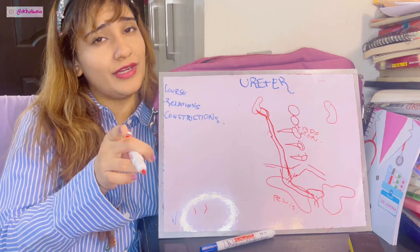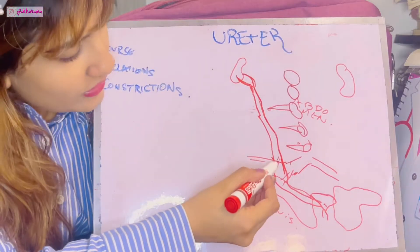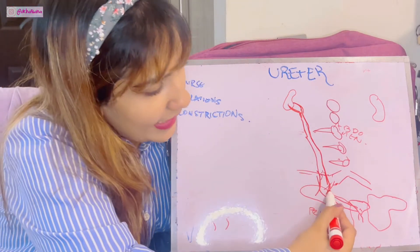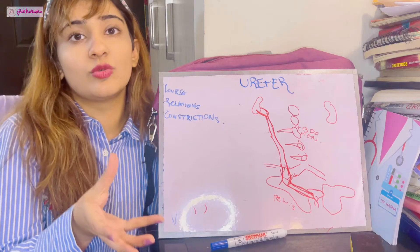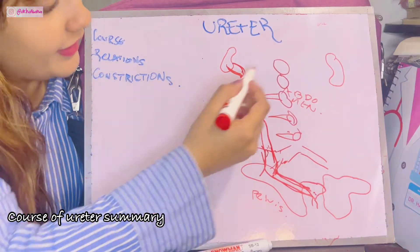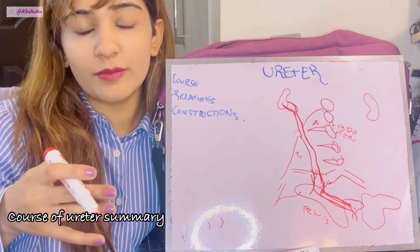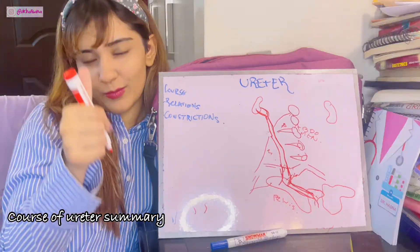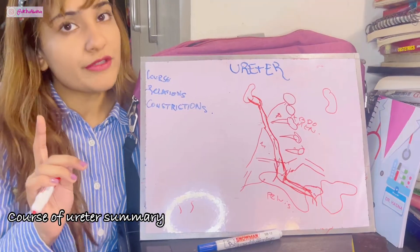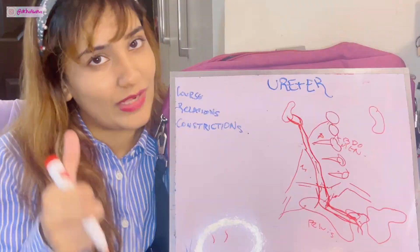Once the ureter enters the pelvis, it runs backwards and laterally. Finally, when it reaches close to the bladder, it goes forwards and medially once again and enters the base of the bladder at the trigone. So to summarize the course: it begins at the renal pelvis, runs downwards and medially, crosses the tips of the transverse processes, lies anterior to the psoas major muscle, enters the pelvis at the termination of the common iliac artery, then runs backwards and laterally. Opposite the ischial spine it turns forwards and enters the base of the bladder.